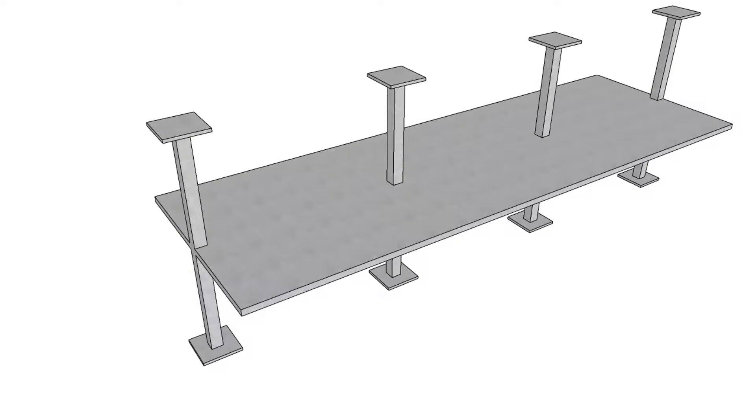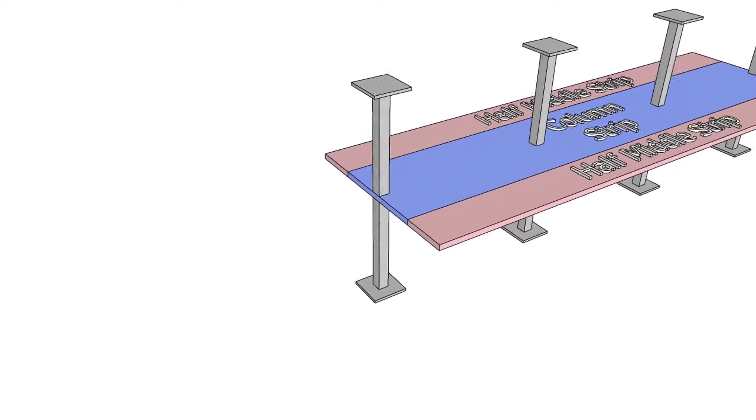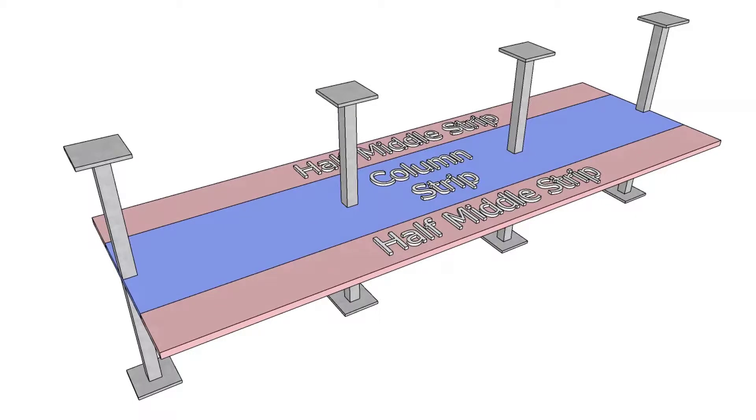In this method, the 3D building is discretized into 2D equivalent frames. Each frame contains a column strip, middle strip, and beam strip.